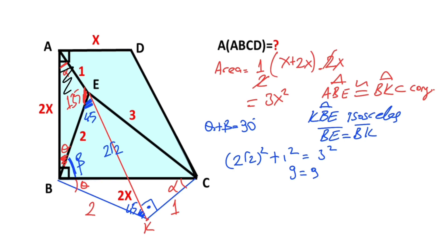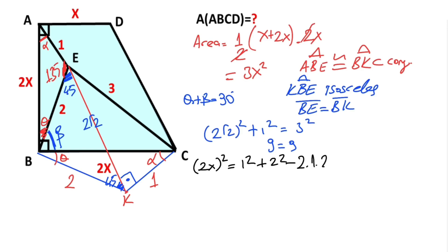If we focus on triangle AEB and apply the cosine rule, we get the value of x. So (2x)² equals 1² plus 2² minus 2 times 1 times 2 times cosine 135 degrees. We know that cosine 135 degrees equals minus cosine 45, which equals minus root 2 over 2.